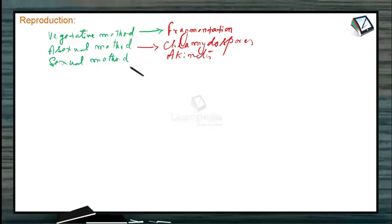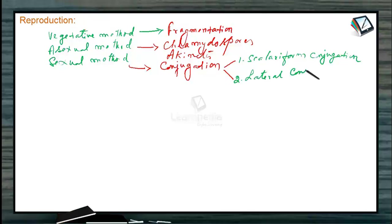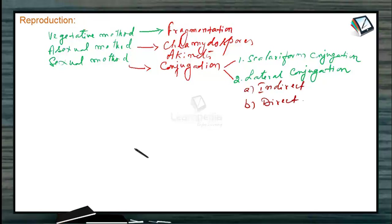The asexual method is by chlamydospores and echinates. The sexual method is by conjugation. This conjugation is of two types: one is scalariform conjugation and another is lateral conjugation. Lateral conjugation is again of two types: indirect and direct.